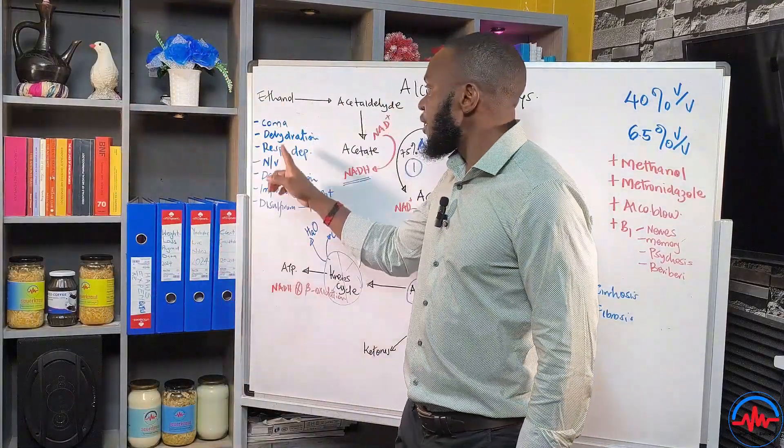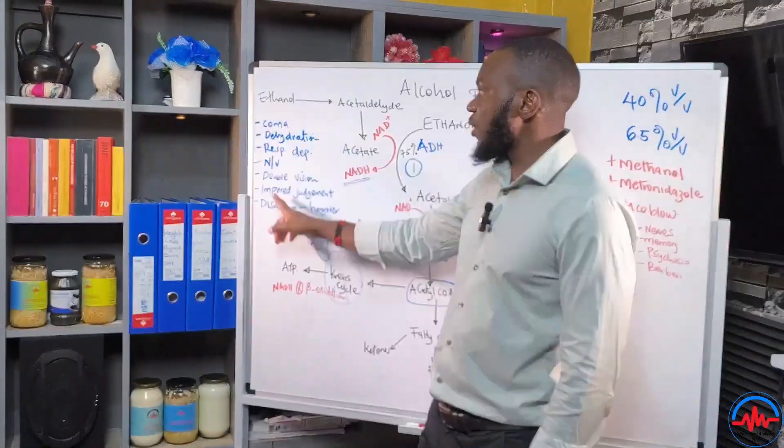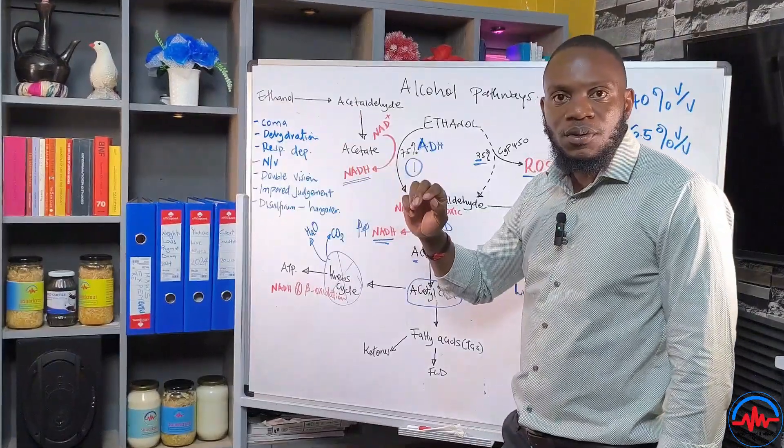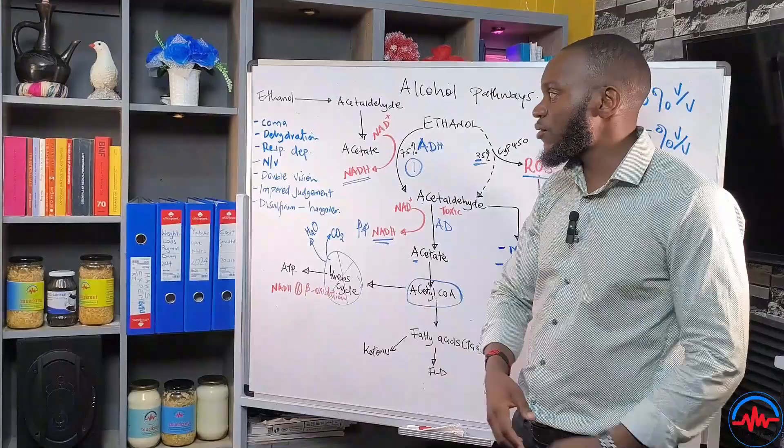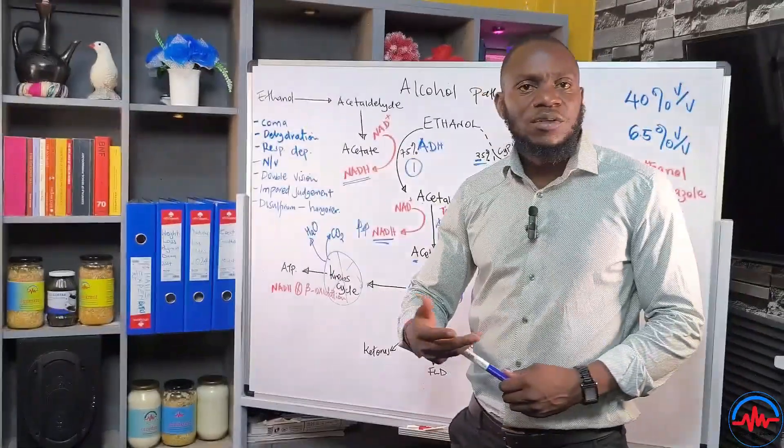Alcohol can cause you a lot of problems. We have the coma. When you're highly intoxicated with alcohol, coma is coming in. You can actually die from it because of dehydration, because of low glucose levels.